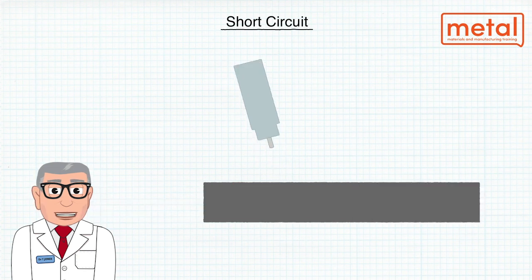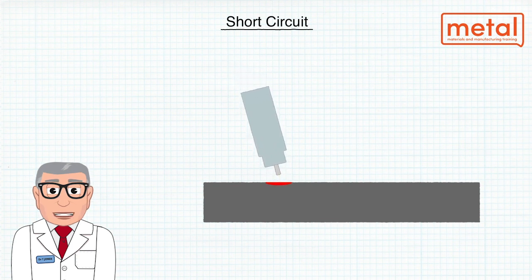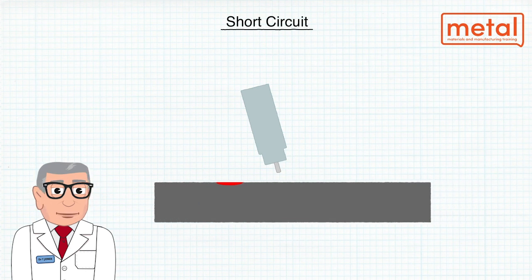Molten metal is transferred from the electrode by the surface tension of the weld pool, which draws the molten metal off the electrode tip into the weld pool itself. The electrode will then separate from the weld pool and re-establish the arc.